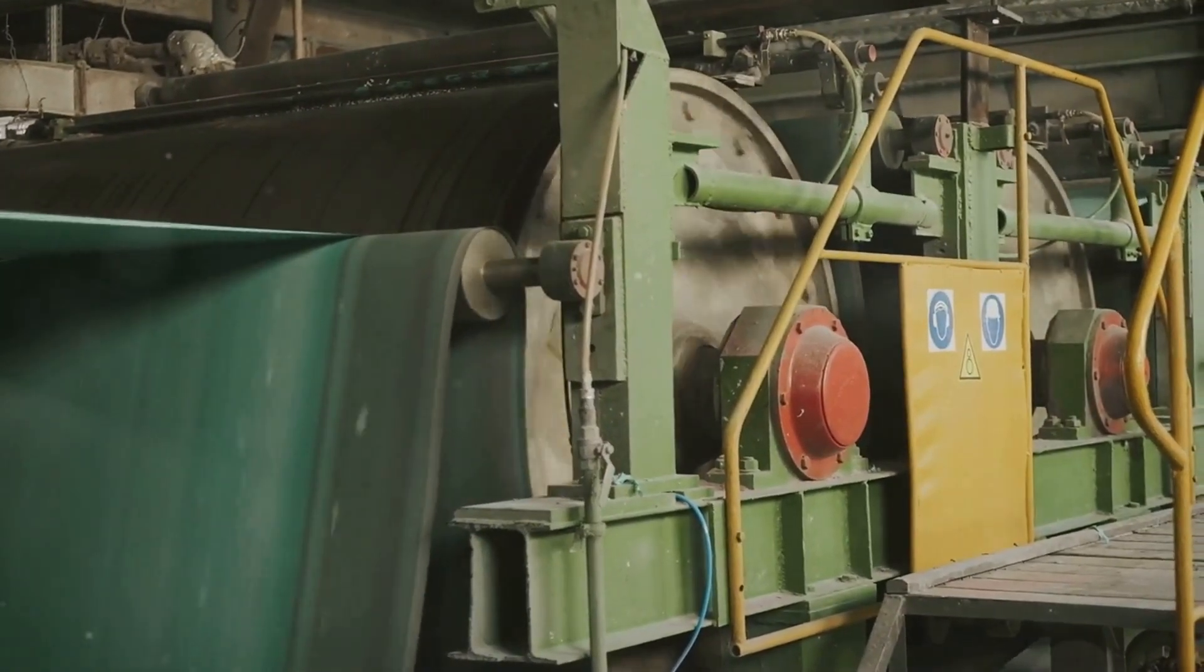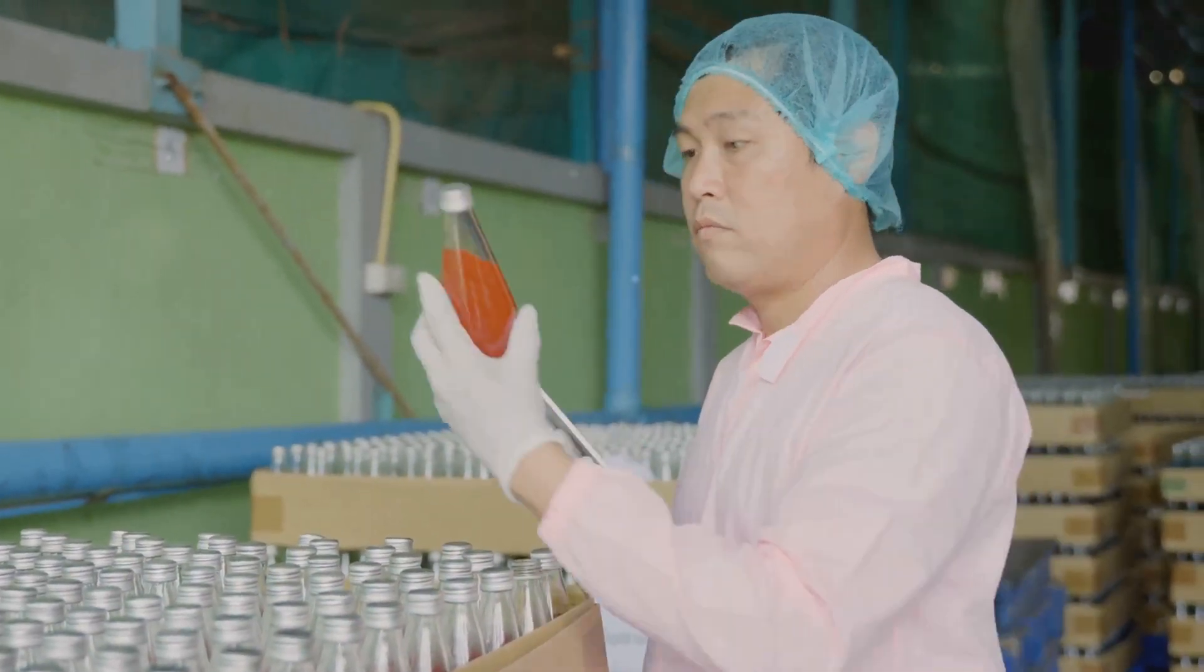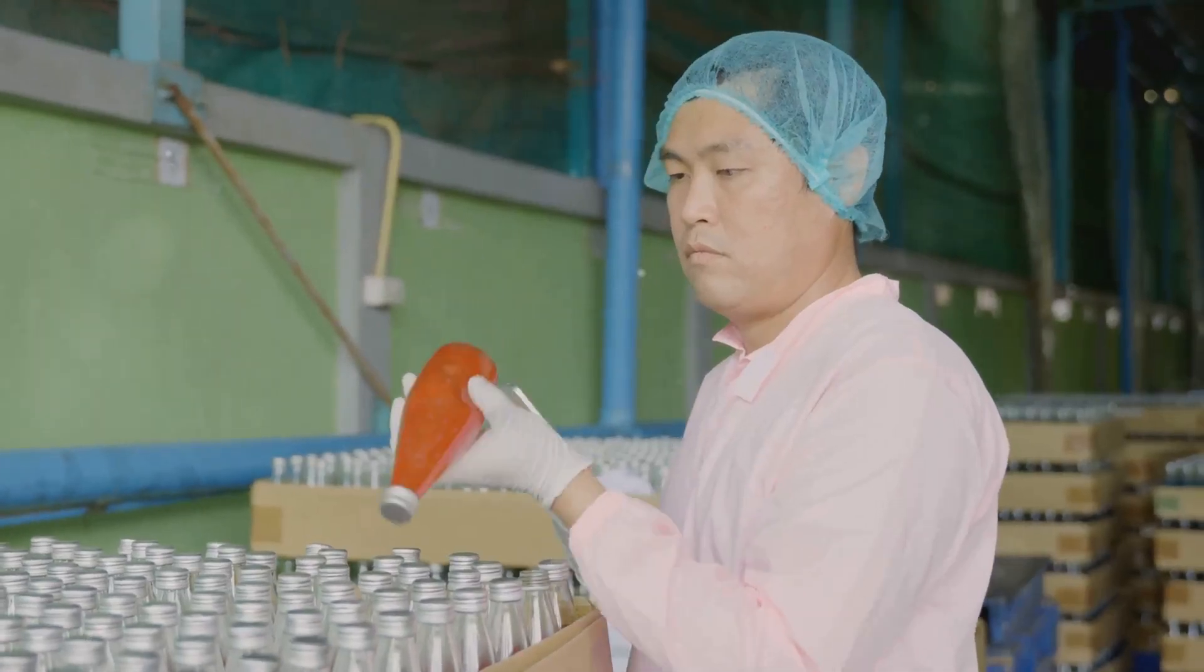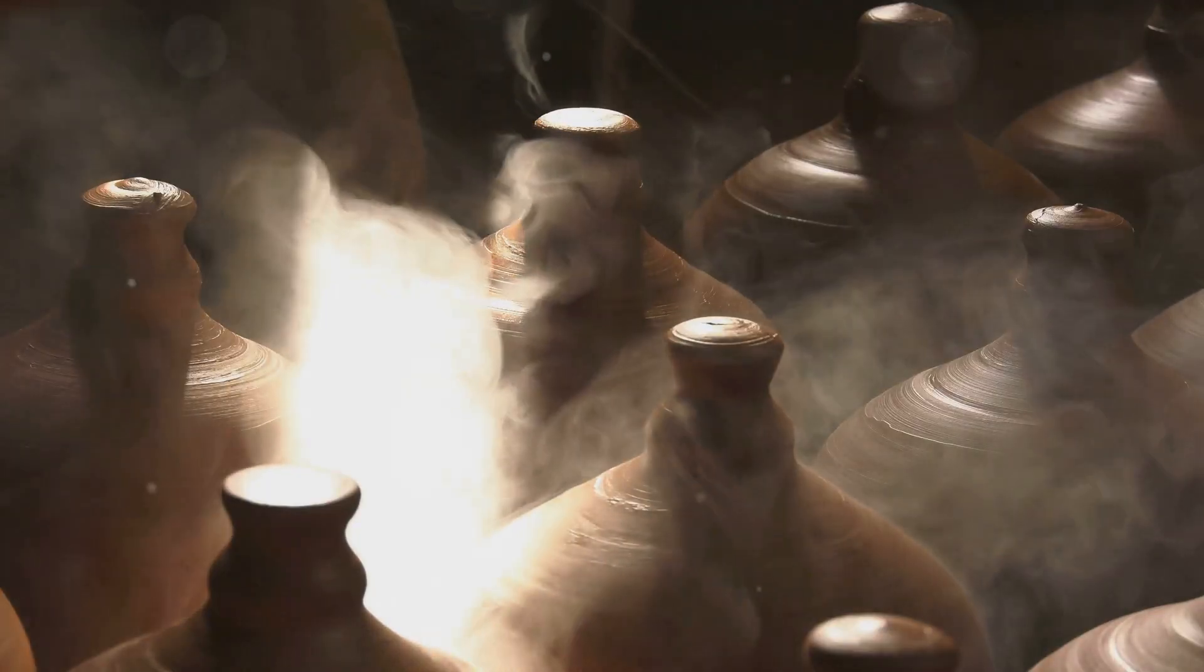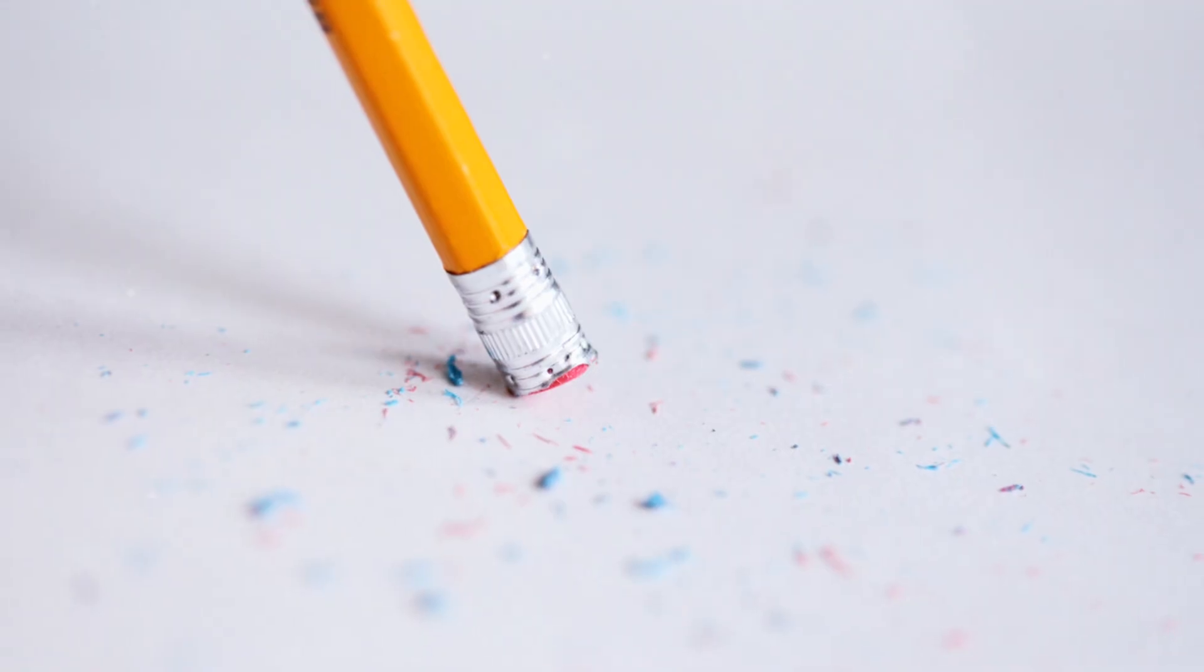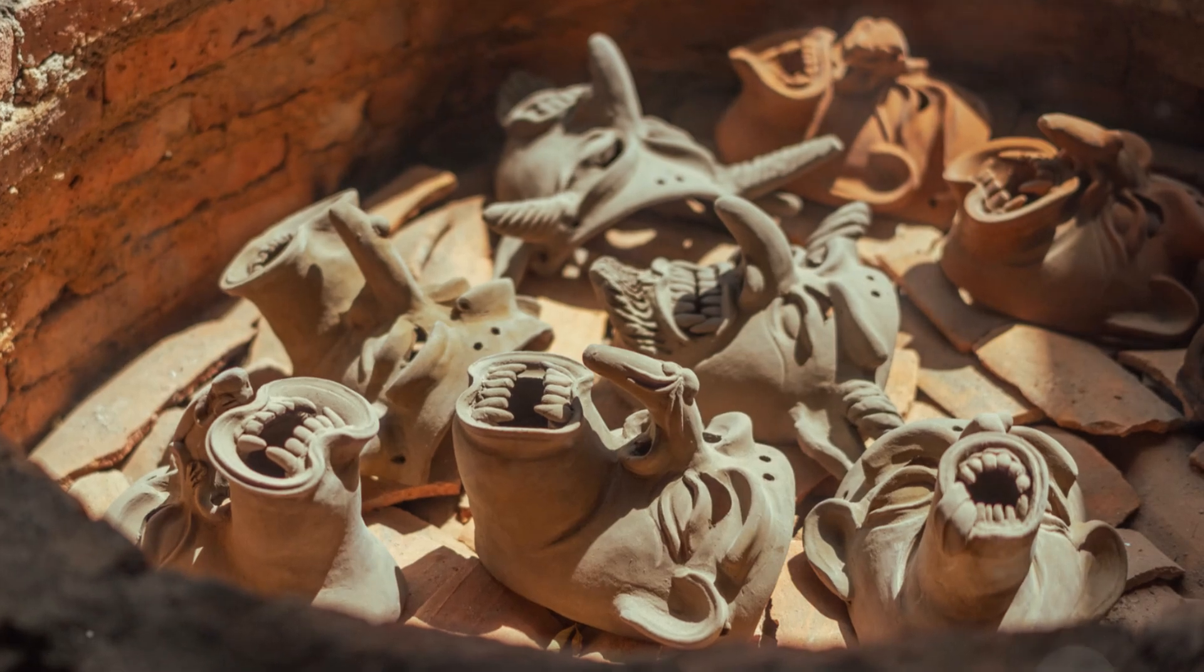The cut strands are then dried to remove any remaining moisture. This drying process is critical for ensuring the lead's structural integrity and preventing breakage during handling and use. Once dry, the leads undergo a high temperature firing process in a kiln. This firing hardens the leads, burning off any remaining binders and giving them their final strength and consistency.